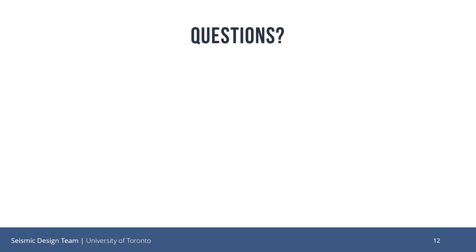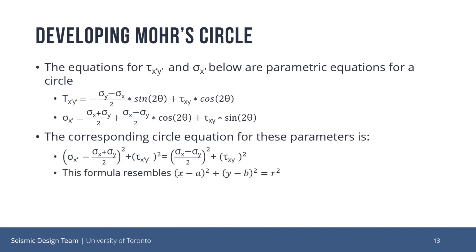Before I proceed, does anyone have any questions about stress transformations and how they were defined? So, to developing Mohr's Circle. As you may observe, the equations for tau xy-prime and sigma x-prime are actually parametric equations of a circle. What this means is that they each describe one component of our circle and are both functions of theta. We will consider sigma x-prime as the x component and tau xy-prime as the y component. The corresponding circle equation for these parameters is shown below, and we may see how this equation resembles the typical formula for the parametric equation of a circle.